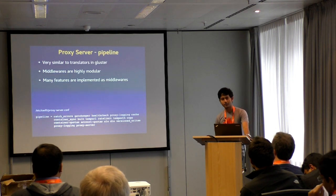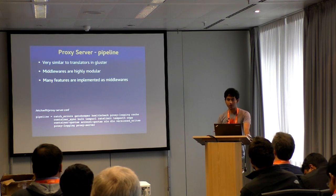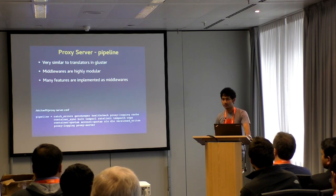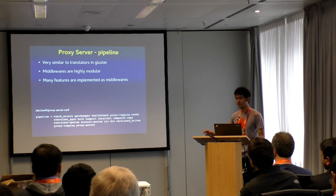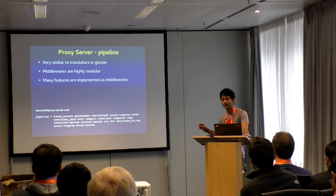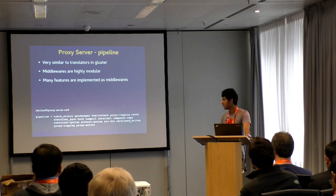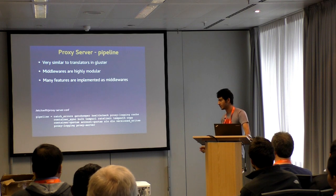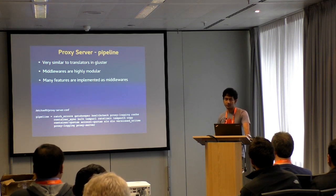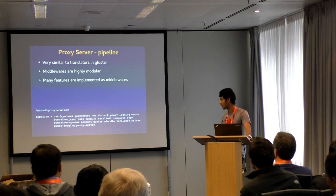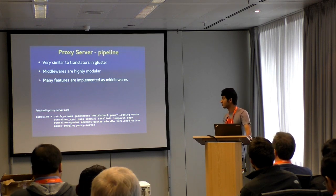There's also a bulk middleware: clients uploading thousands of files can put them in a tarball and send one request; bulk splits it into individual objects, deflates it, and stores them as single objects. There's a copy middleware for server-side copy — a client sends an HTTP request with source and destination and the copy happens on the backend without any data download or upload to the client. From a Gluster standpoint though, it's not true server-side copy because we use a FUSE mount — there's a read and a write. There's also version writes, which is object versioning.